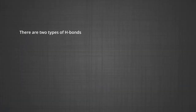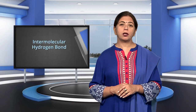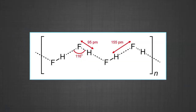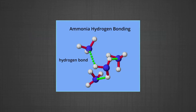Now let us discuss the types of hydrogen bonds. There are two types: intermolecular hydrogen bond and intramolecular hydrogen bond. The intermolecular hydrogen bond is formed between two different molecules of the same or different compounds. For example, hydrogen bonding in HF, alcohol or water molecules is intermolecular hydrogen bonding.